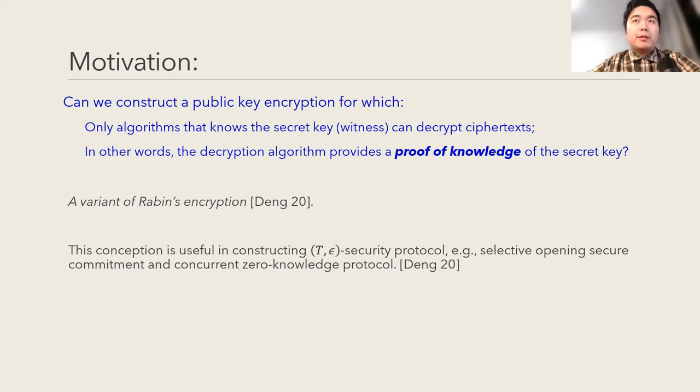The only exception we are aware of is Rabin's encryption, of which security is based on the factoring assumption. As shown in Deng 20, this conception is useful in constructing CCA secure protocols.